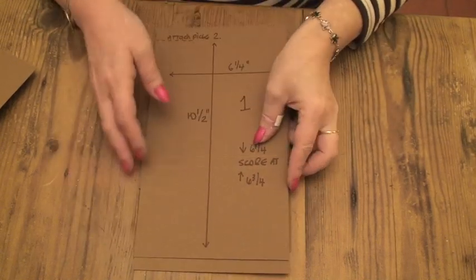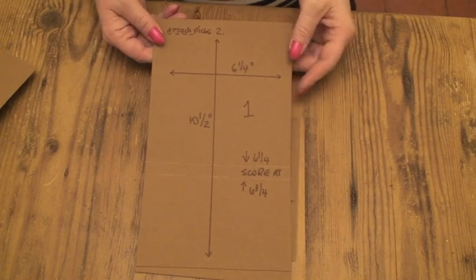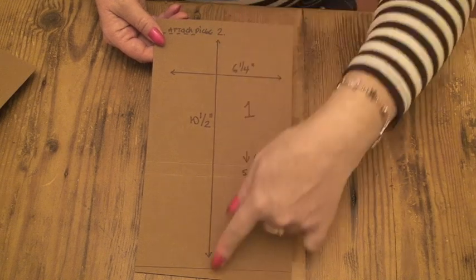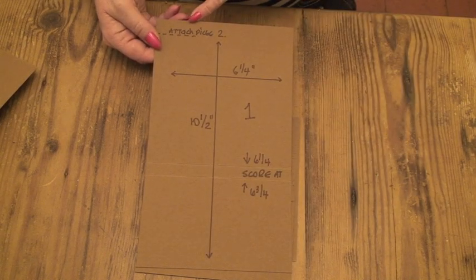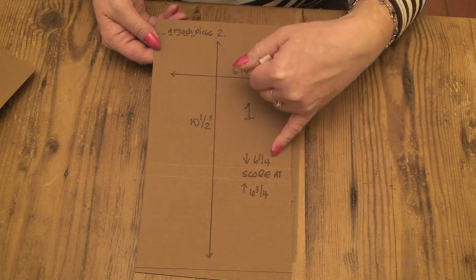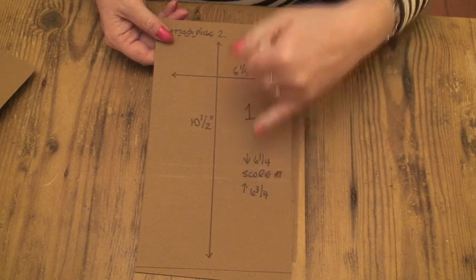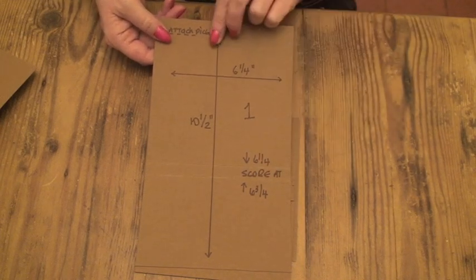Piece one is 6¼ inches across by 10½ inches long and scored at 6¼ and 6¾ from the 6¼ edge.